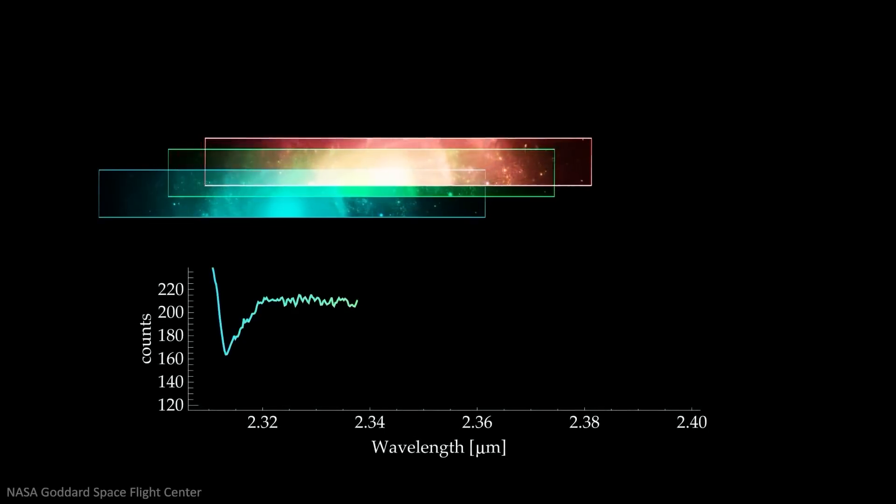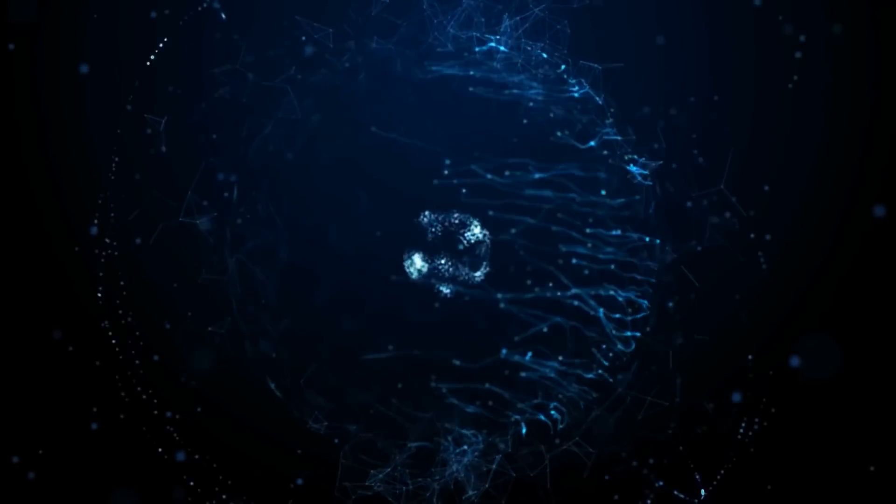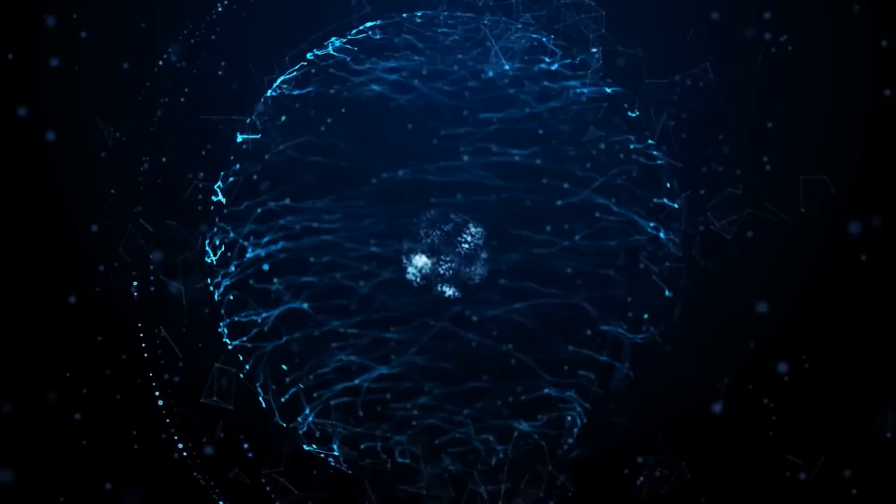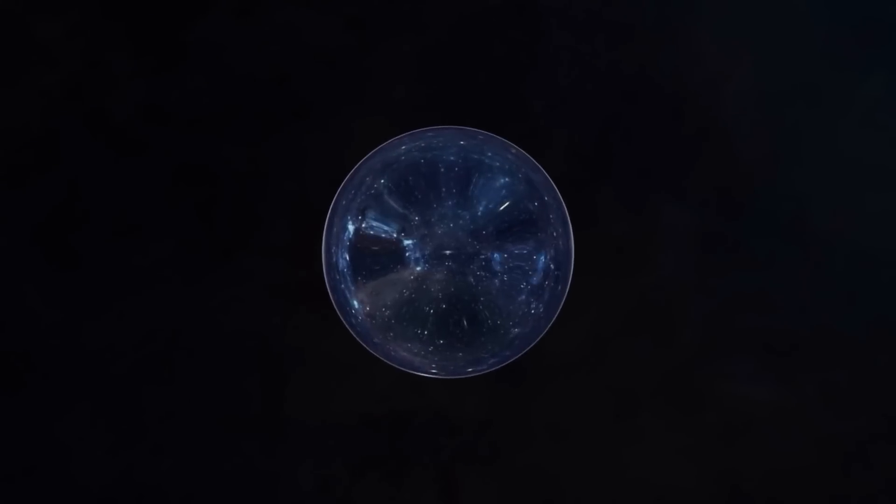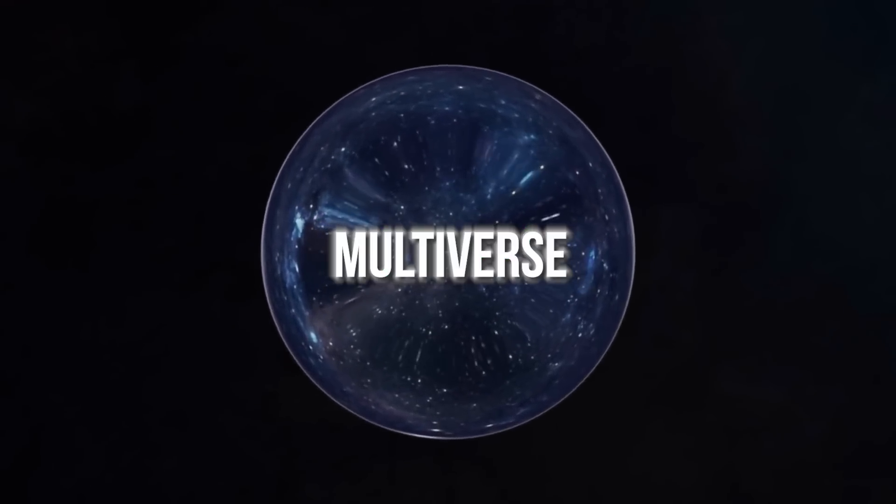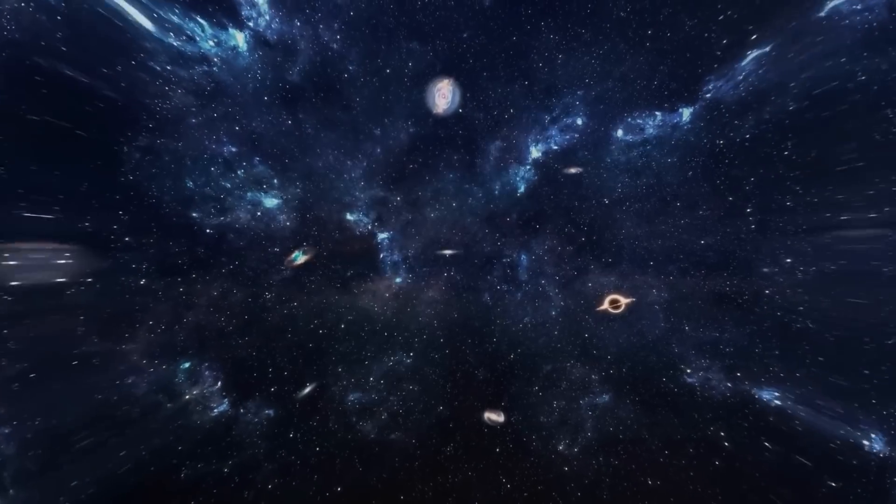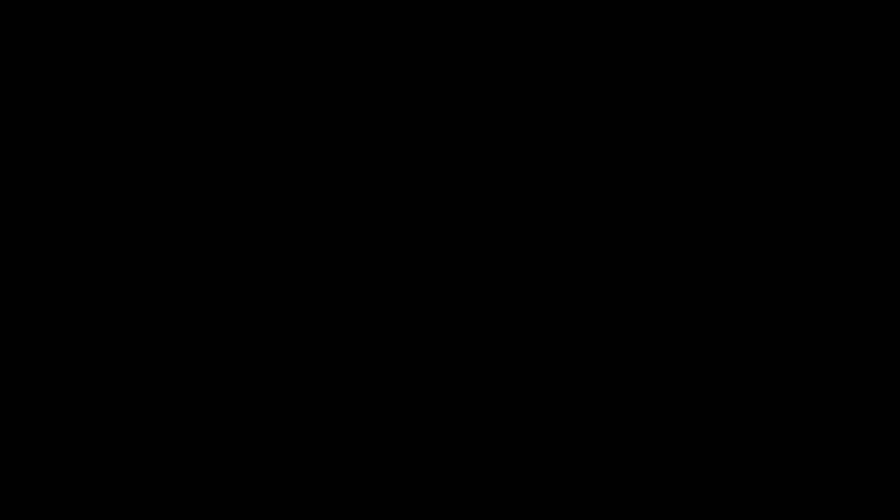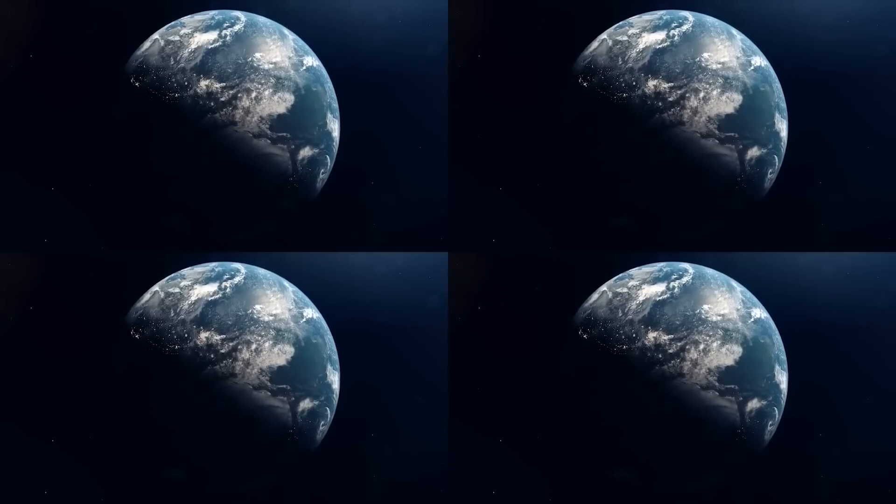Kaku believes that parallel universes are not just made up in stories, but they could actually be real based on certain branches of physics. Let's try to understand what parallel universes mean. Kaku talks about something called the multiverse. This idea says that there could be many universes, each with its own special features. These universes might have started differently during the early expansion of the universe.